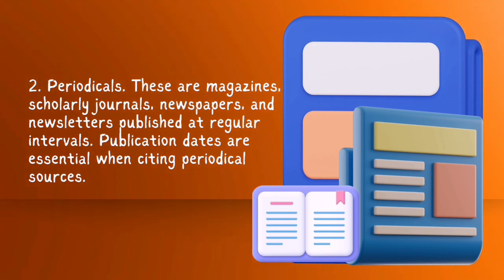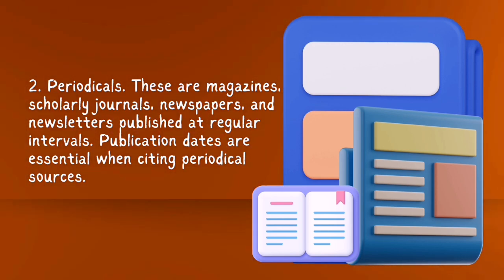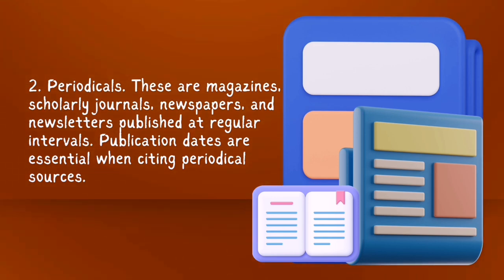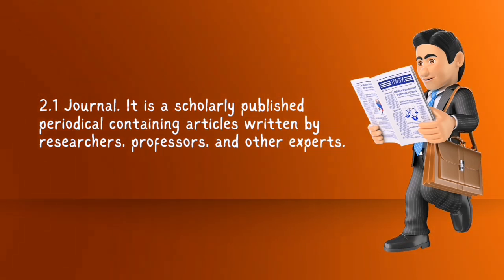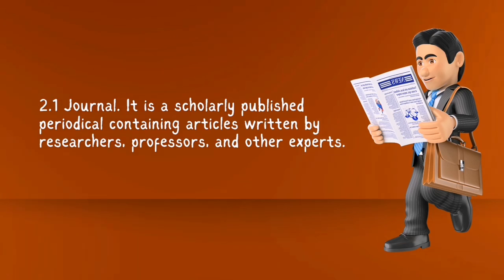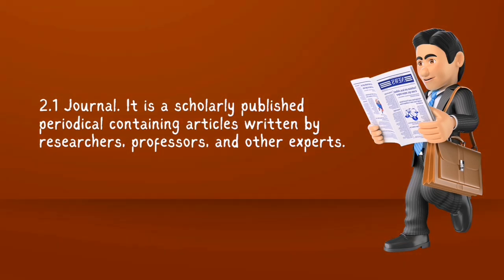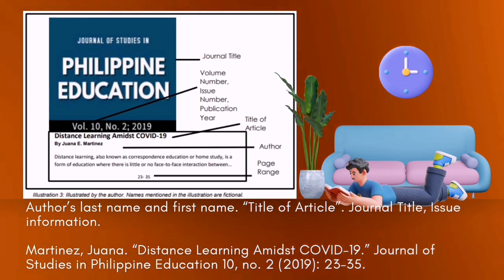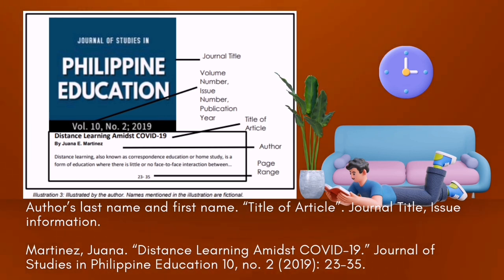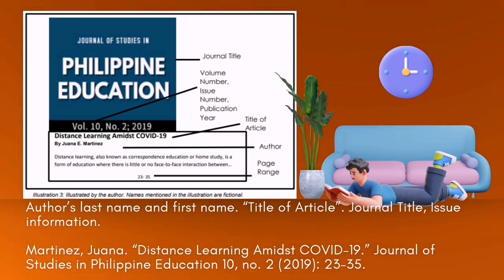Two. Periodicals — these are magazines, scholarly journals, newspapers, and newsletters published at regular intervals. Publication dates are essential when citing periodical sources. Number one: Journal — it is a scholarly published periodical containing articles written by researchers, professors, and other experts. This is the sample format of writing a journal bibliography: author's last name and first name, title of article, journal title, issue information. Example: Martinez, Juana. "Distance Learning Amidst COVID-19." Journal of Studies in Philippine Education 10, no. 2, 2019, pages 23 to 35.